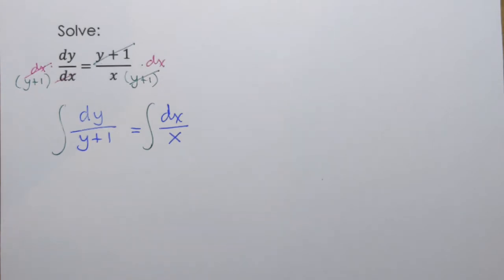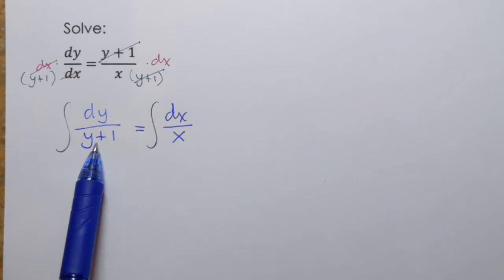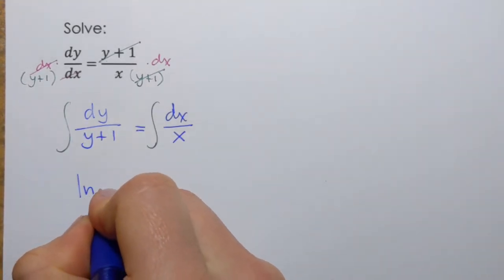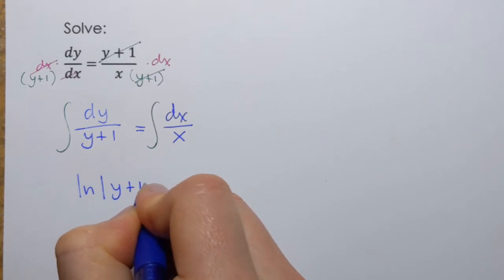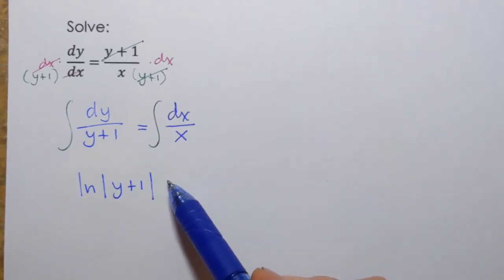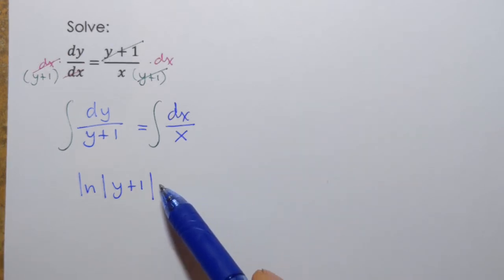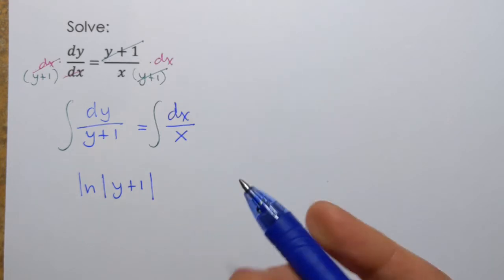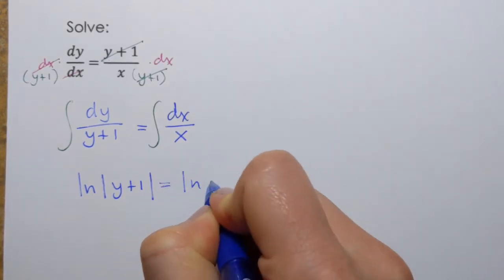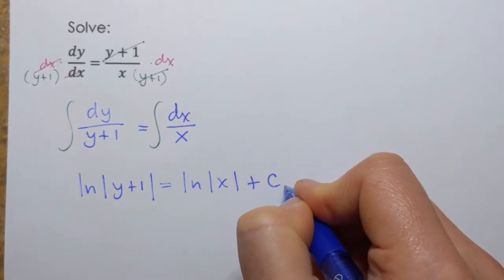Now in this case integration is going to be very simple. These are just going to be natural logarithms. So it's ln|y+1| and as you know from the previous example we don't really have to write +c on both sides. It's enough to write +c on one side since we can combine constants. Anyway equals ln|x| now plus c1.